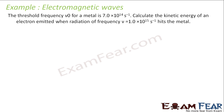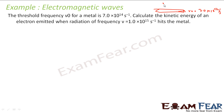Next example: the threshold frequency of a metal is 7.0 × 10¹⁴ per second. Calculate the kinetic energy of the electron emitted when radiation of frequency 10¹⁵ per second — that is 10 × 10¹⁴ per second — hits the metal.